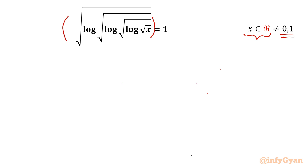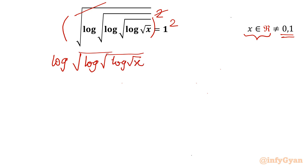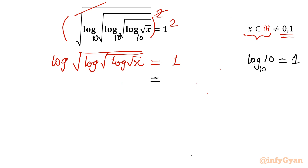It is squaring both sides. So I will cancel this first square root and the power 2. So the equation will become log of square root, log of square root, log of square root x. Right hand side I will write 1 squared which is 1. Now in this problem the base is not mentioned, so each base is 10 here. I can write the property: log 10 with base 10, this value is always 1. So in place of the right hand side let me write log 10. Base is 10 everywhere.